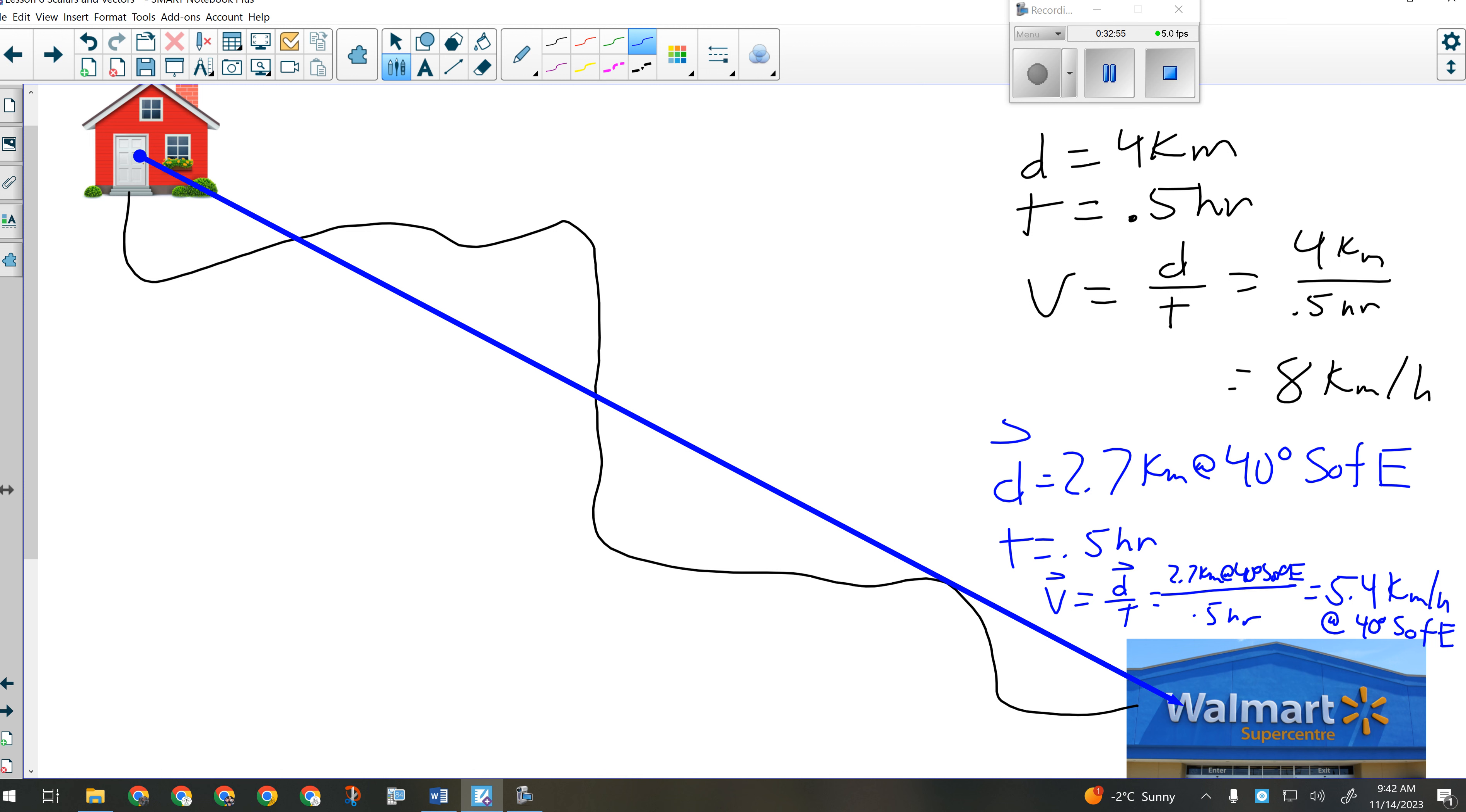So let's say that my displacement ends up being 2.7 kilometers at 40 degrees south of east. Did that take a half an hour? That's the vector description of my trip. It took me a half an hour to change my position by that much. It doesn't mean I actually followed this. I followed the black line. But it took me a half an hour to change my position by the amount indicated by that blue arrow. So the time is still half an hour.